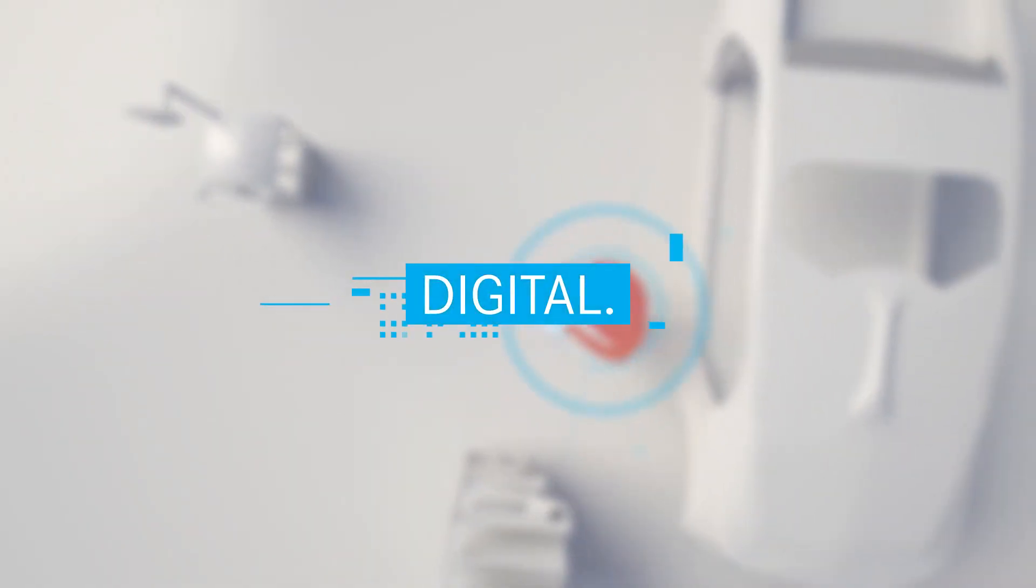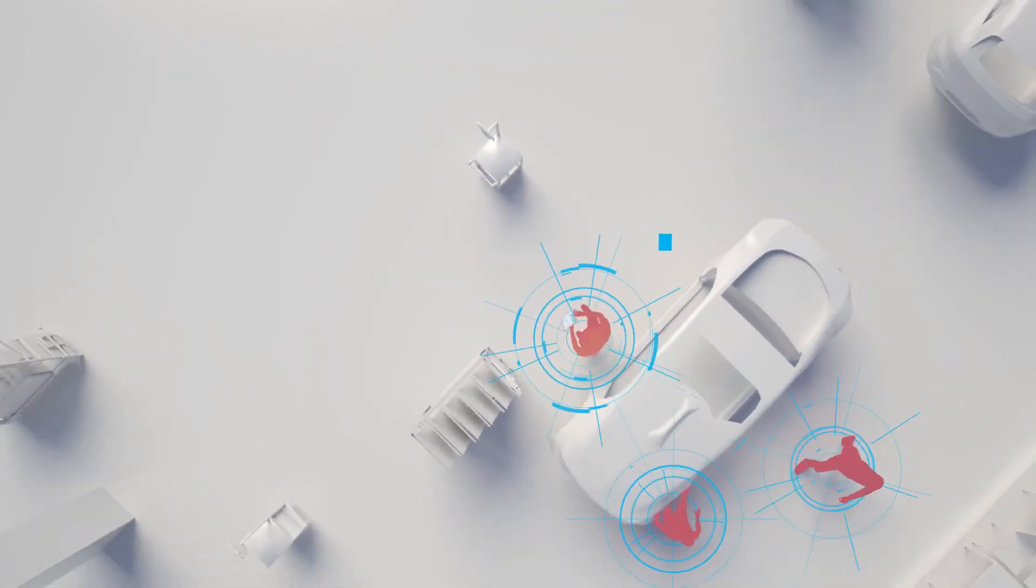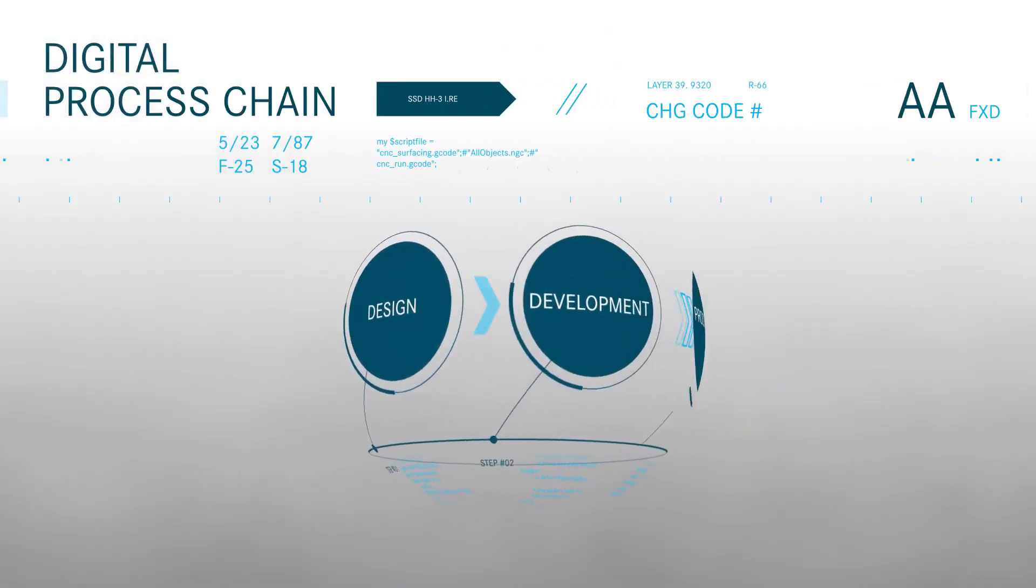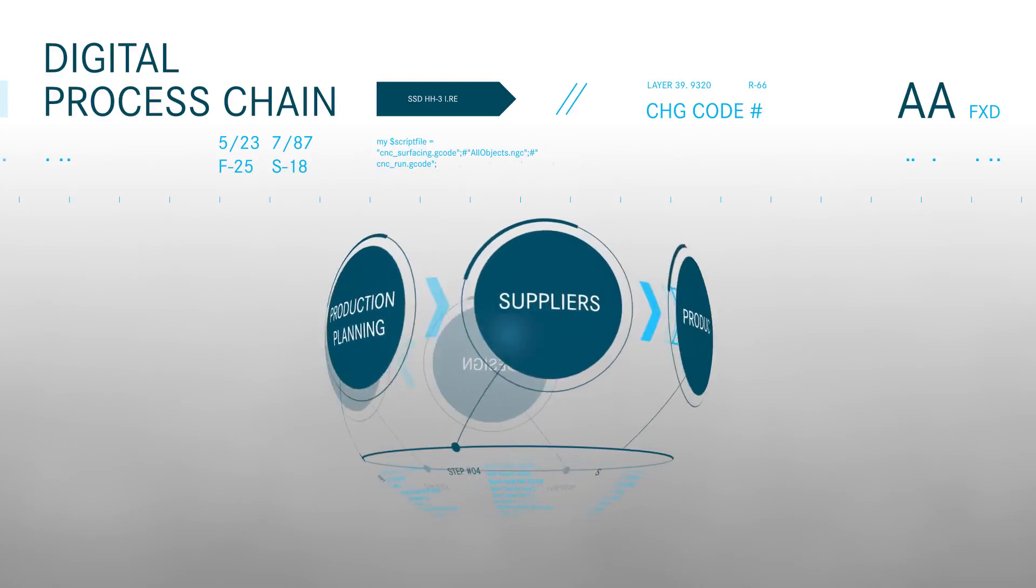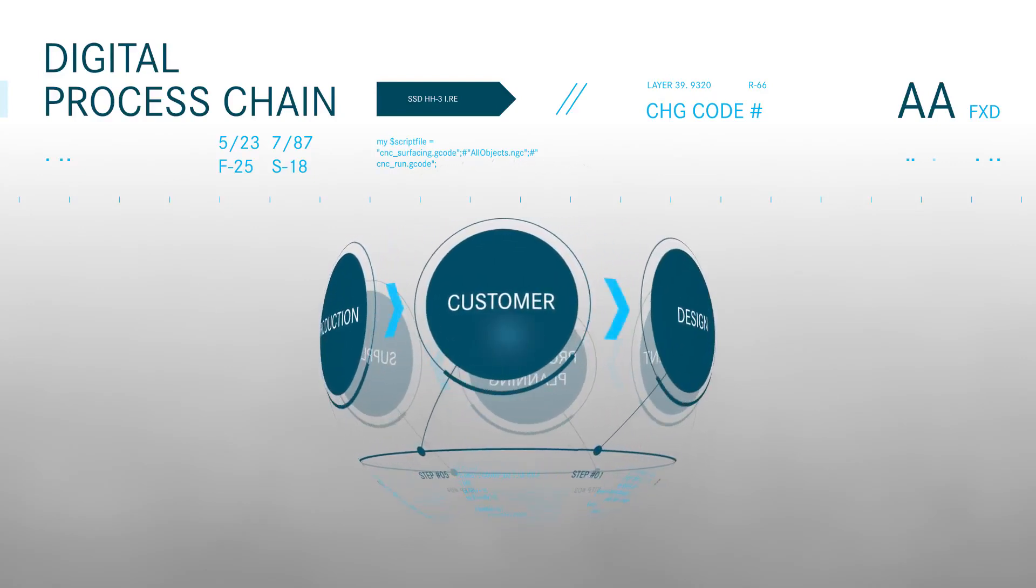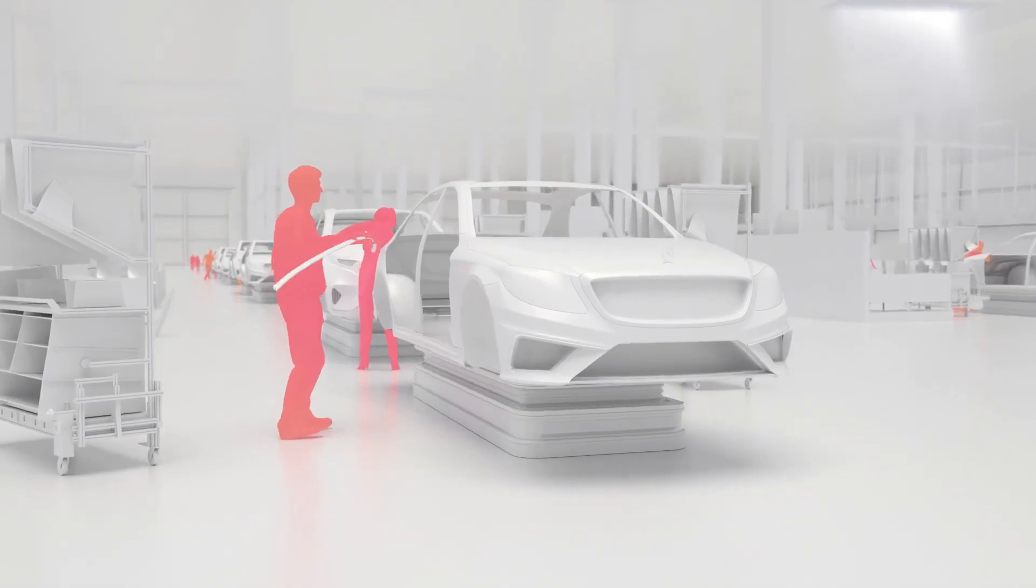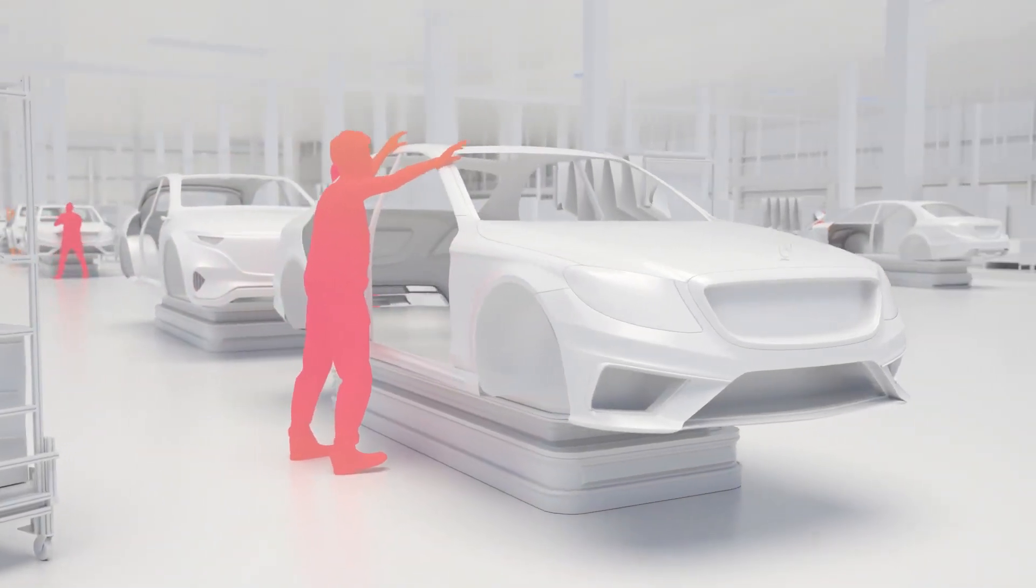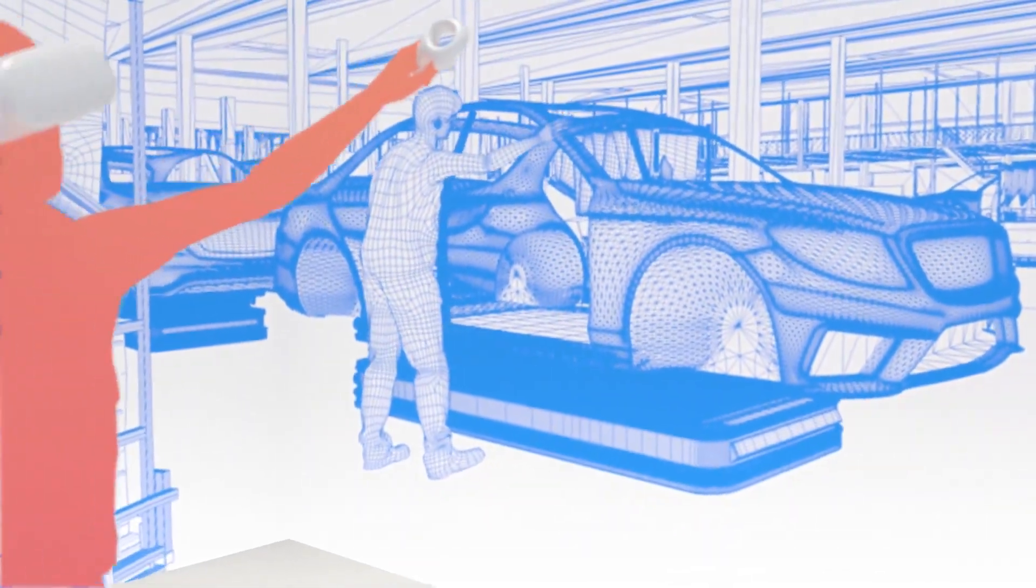Digital. State-of-the-art Industry 4.0 technologies support our Factory 56 production process across the entire value chain. 360 degrees from design and development through suppliers to final assembly by our workers. Factory 56 already exists as a digital model. Our digital twin of the production facility. This is how we digitally safeguard production processes.